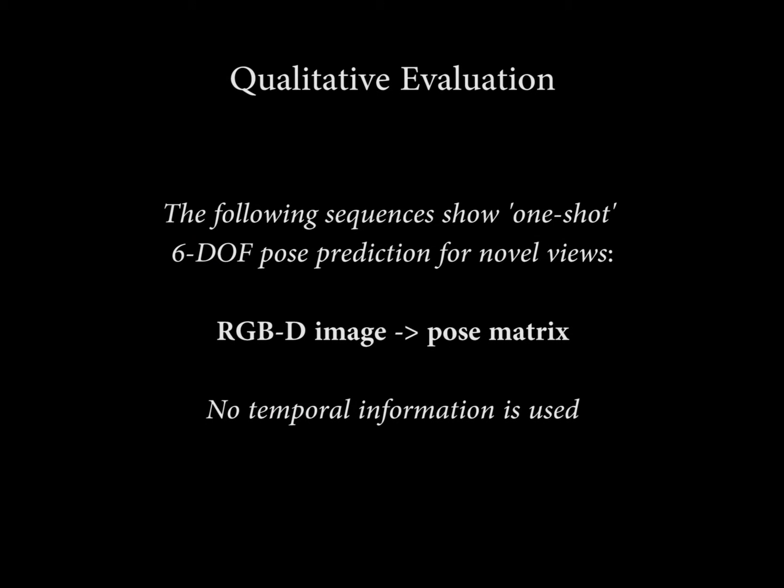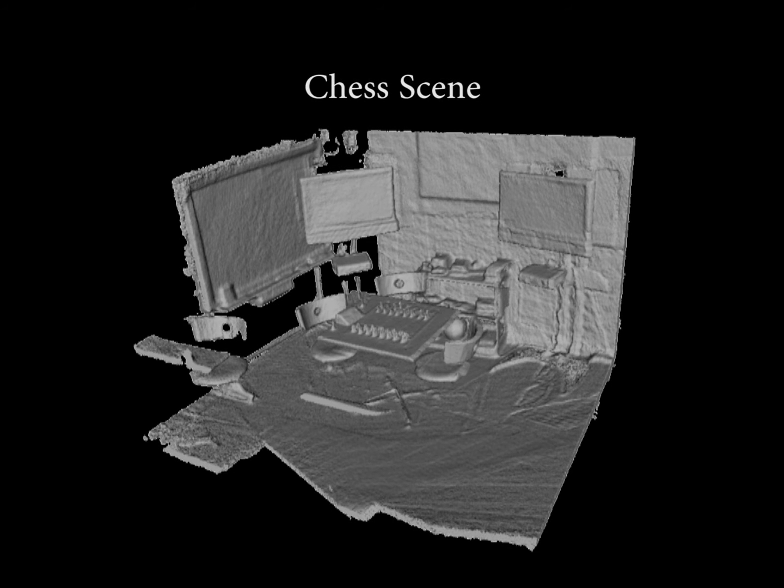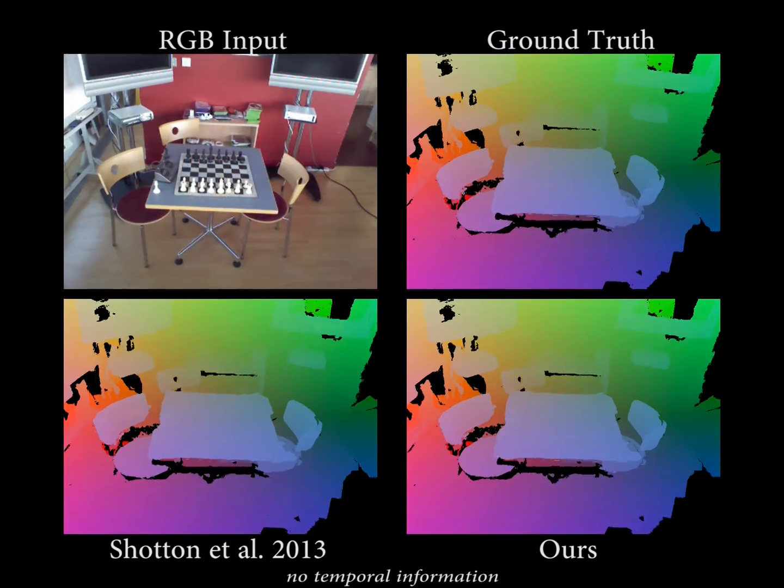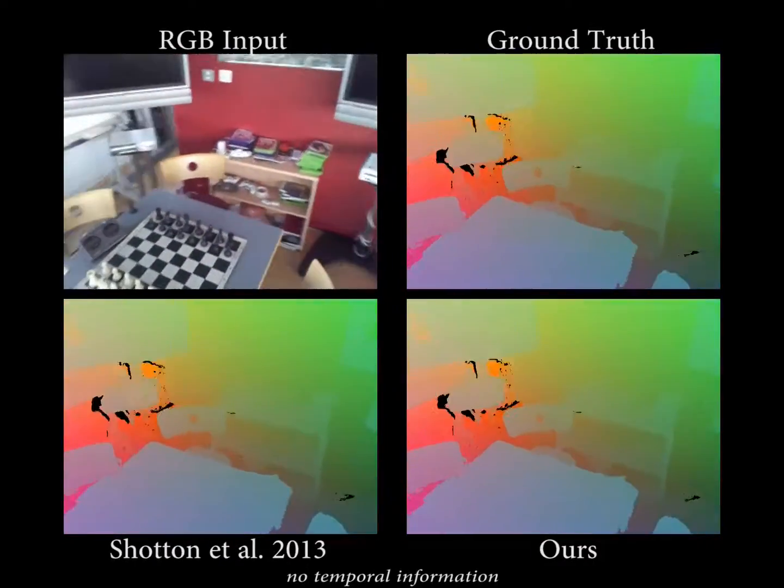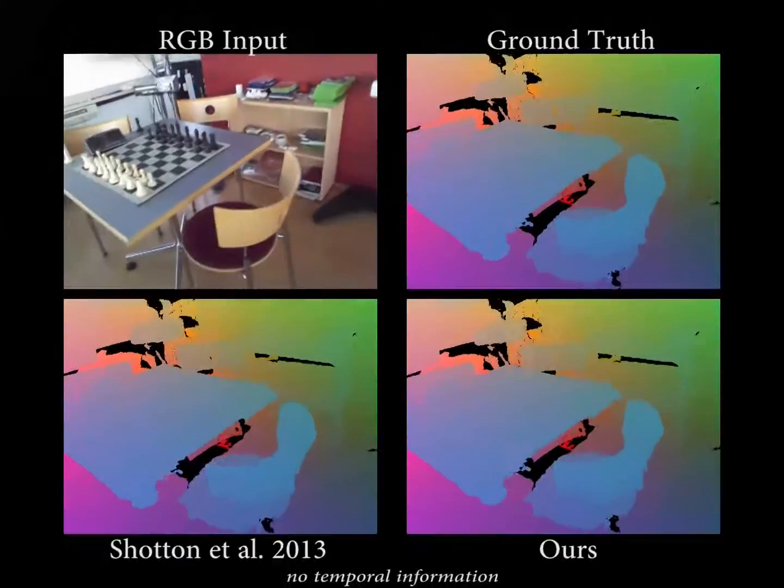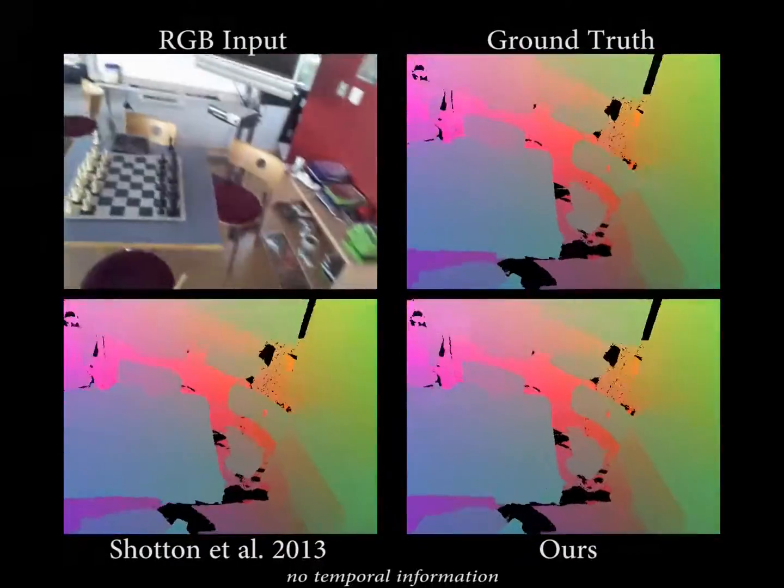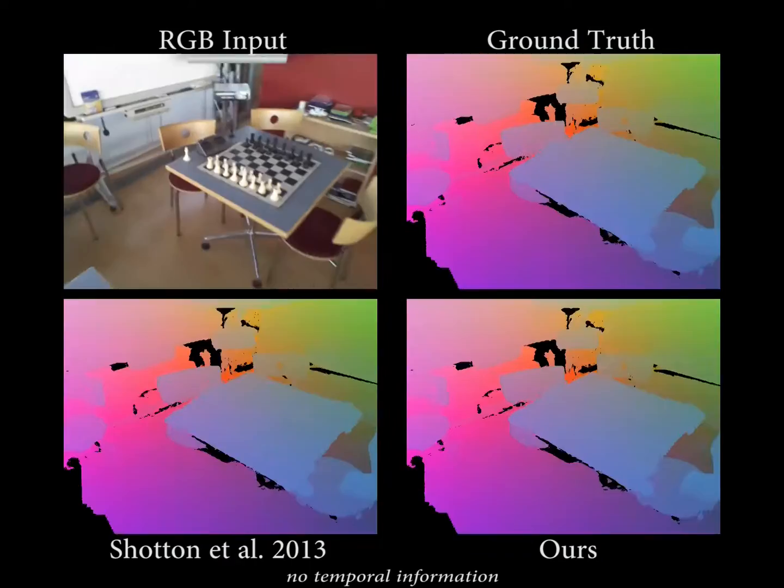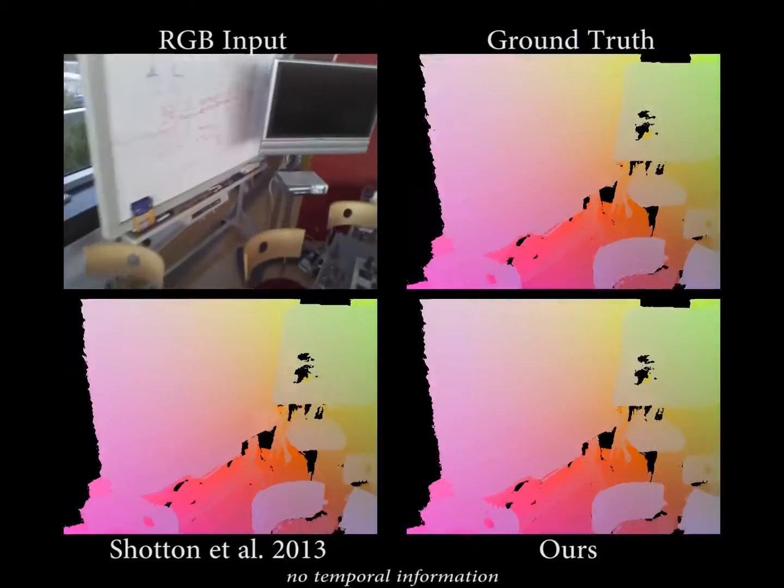In the following, we show a qualitative evaluation of our method and previous work. We use the obtained pose predictions to generate renderings of the scanned environments. Note that tracking is only based on single RGBD frames without exploiting any temporal prior.